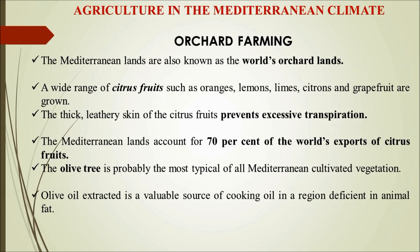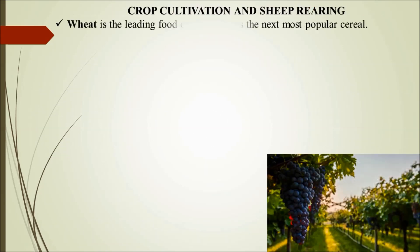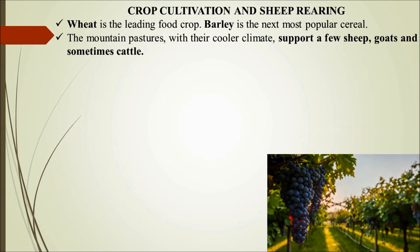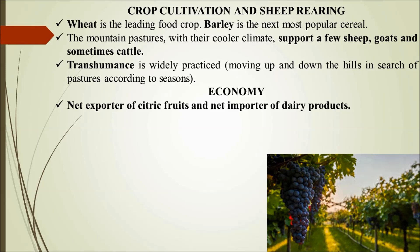Besides olives, trees like chestnut, walnut, hazelnut, and almonds are grown, catering largely to the chocolate industry. Wheat is the leading food crop and barley is the next popular cereal. Mountain pastures with cooler climates support sheep, goats, and sometimes a little cattle. Transhumance — seasonal migration for pastures — is widely practiced in this area. The economy is largely dependent upon citrus fruits and dairy products, with import of dairy products and export of citrus fruits.